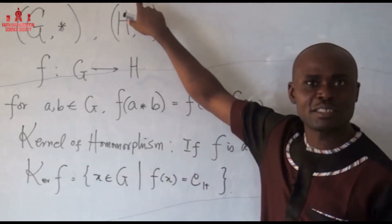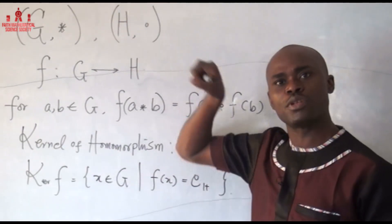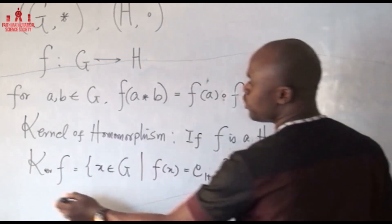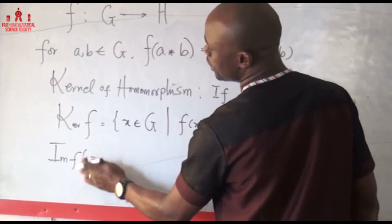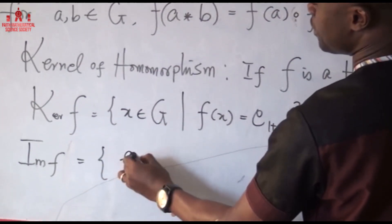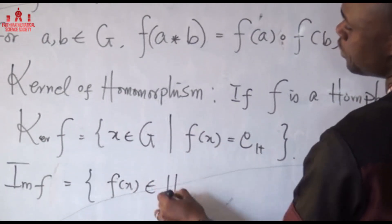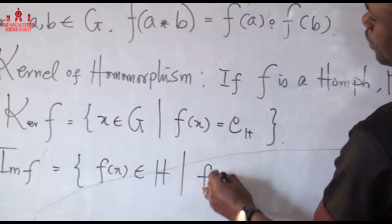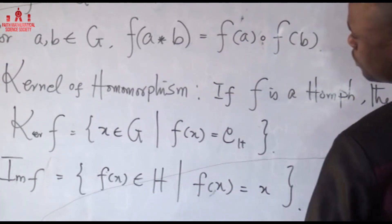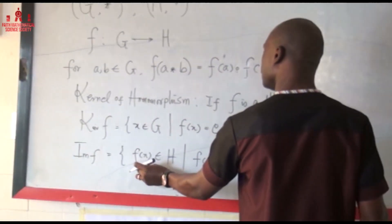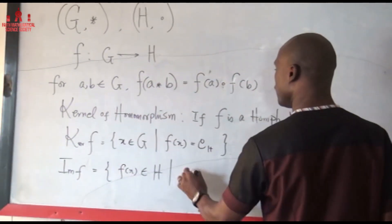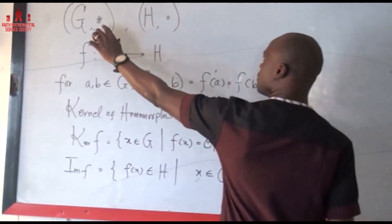To find the kernel of a homomorphism, the first thing we must know is the identity element of the target group H. Once we know the identity of H, we can identify those elements in G that map to it — and that is the kernel. We also have what we call the image of f: those elements f(x) in H such that x is in G.